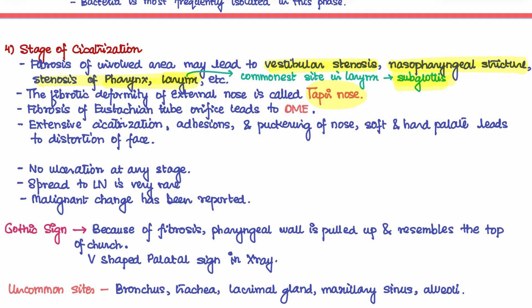There can also be extensive cicatrization, adhesion, and puckering of the nose, soft palate, and hard palate, leading to distortion of the face. There is no ulceration in this phase, but malignant change has been seen. The gothic sign is also seen in this stage — due to fibrosis, the pharyngeal wall gets pulled up and resembles the top of a church — a V-shaped palatal sign visible on X-ray. Uncommonly, the bronchus, trachea, lacrimal glands, maxillary sinus, and alveoli can be involved.